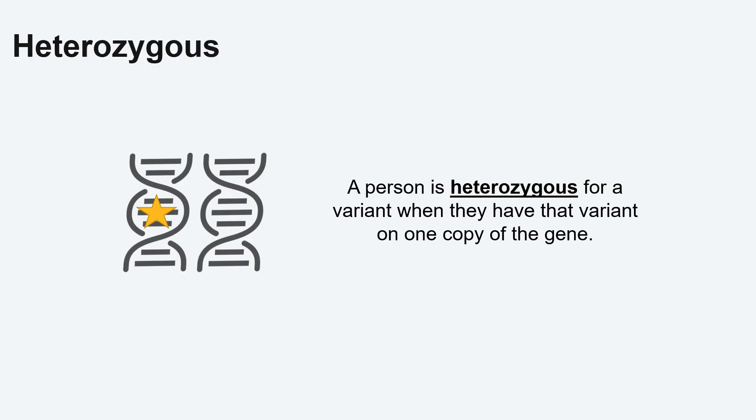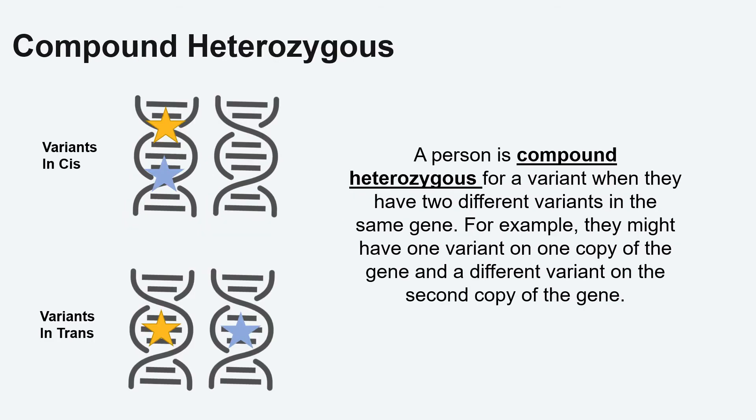Heterozygous is used to describe when only one variant in a gene is found on one copy of the gene. When there are two variants in the gene but they are different variants, the variants are called compound heterozygous. When the two different variants are on different copies of the gene, the variants are said to be in trans. And when the two different variants are on the same copy of the gene, the variants are said to be in cis.